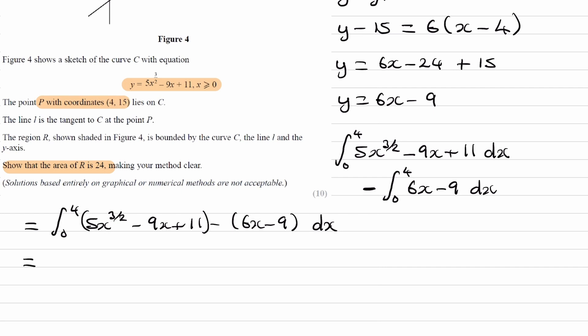We can then simplify the inside of this before we integrate. 5x to the 3 over 2, so minus 9x minus 6x would be minus 15x. And then we have 11 minus minus 9, so 11 plus 9, which would be plus 20.